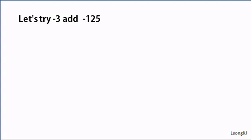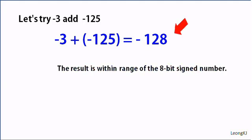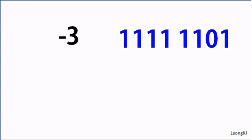Let's try adding negative 3 to negative 115. The result is negative 118. The result is within range of an 8-bit signed number. How does the computer processor indicate that this operation is OK? Let's see how the computer processor performs the operation.